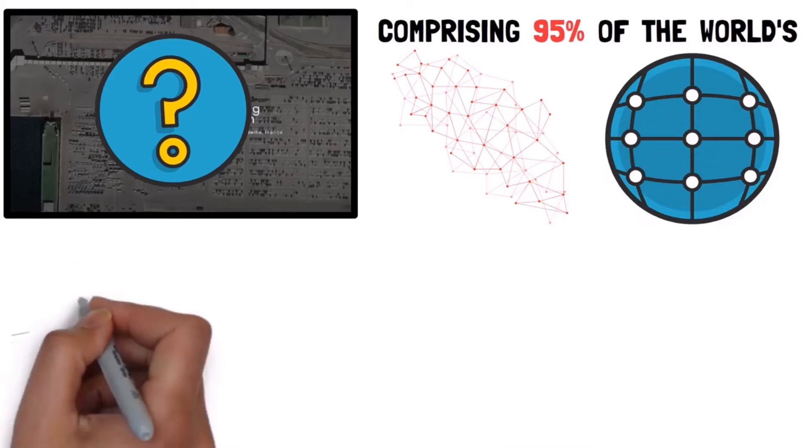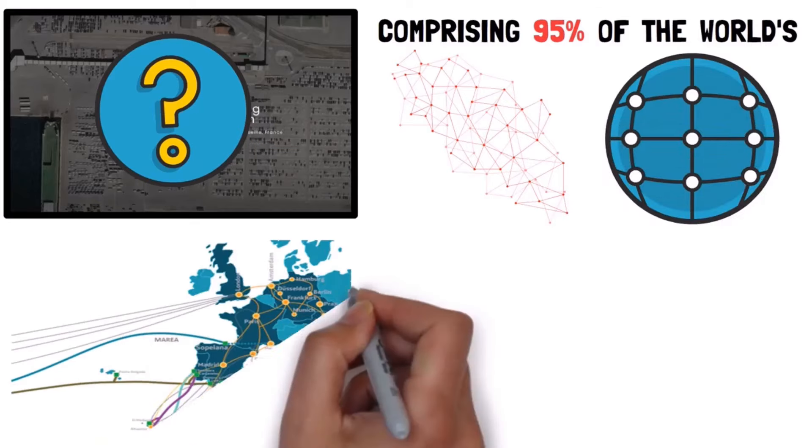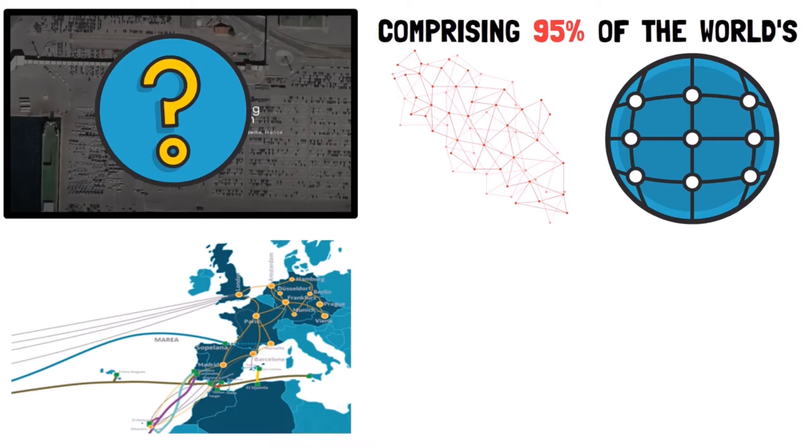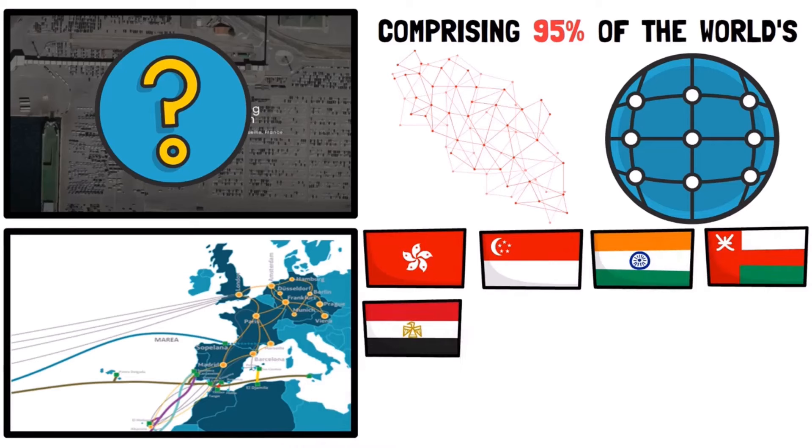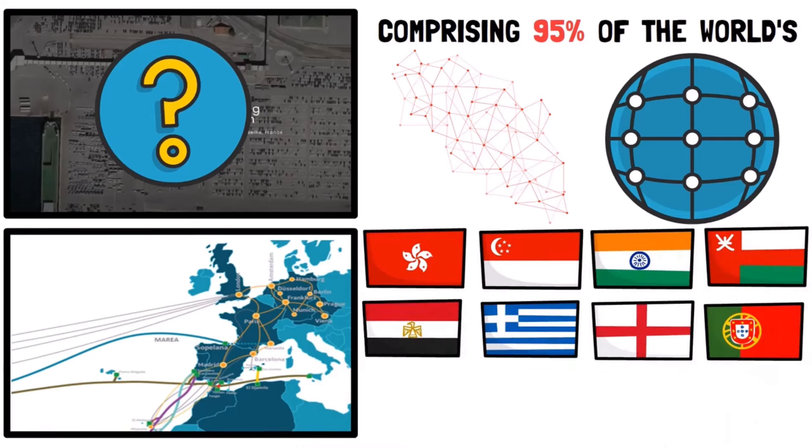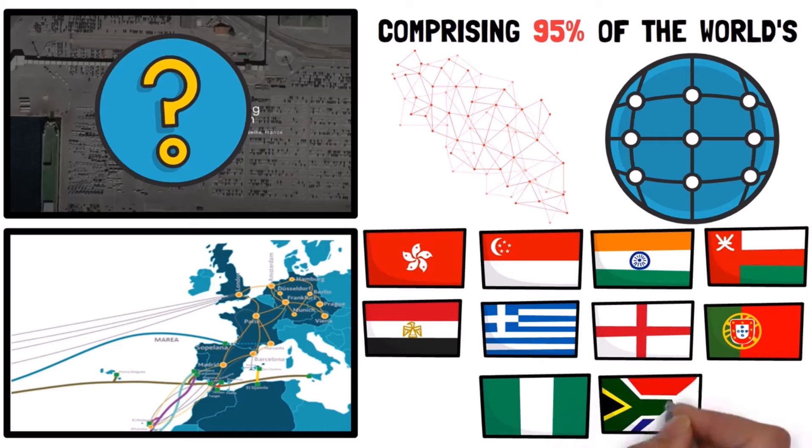This network comprises 95% of the world's overseas internet traffic. As of 2021, the Marseille facility connects to 16 major undersea cables, serving areas as diverse as Hong Kong, Singapore, India, Oman, Egypt, Greece, Britain, Portugal, Nigeria, and South Africa.